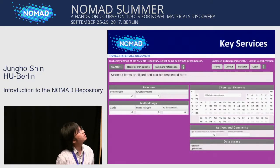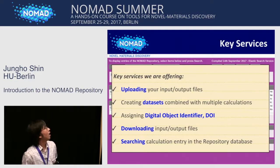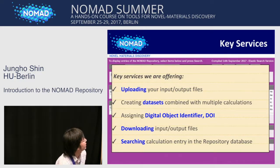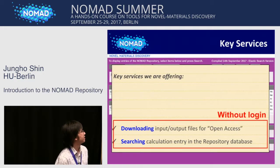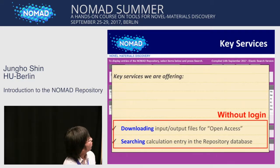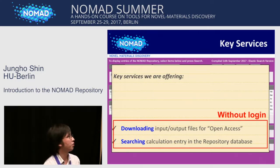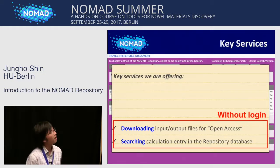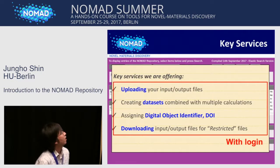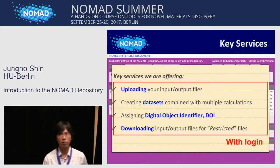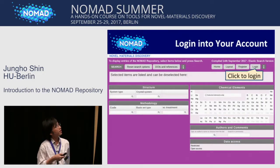Click here if you want to move to the Java web application for the GUI. This is the front page of our GUI. Here is the list of key services currently we are offering. For downloading input files for open access files and searching calculations in the database, you don't need to log in to your account because these services are freely available. But if you want to upload your files, create a dataset, or assign a DOI, you need to log in. You can click this button to log in.